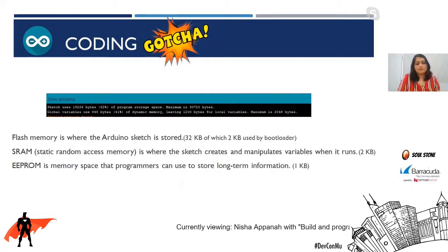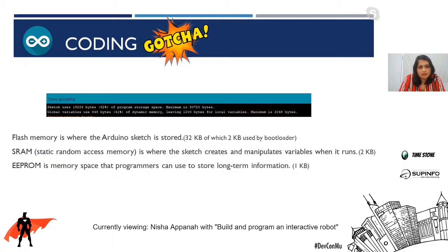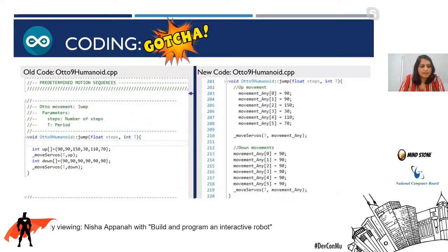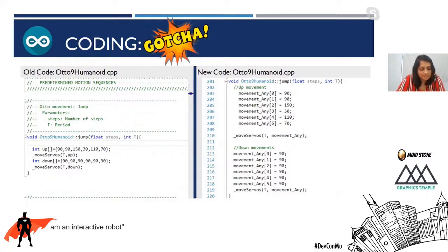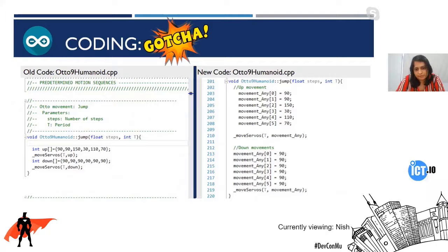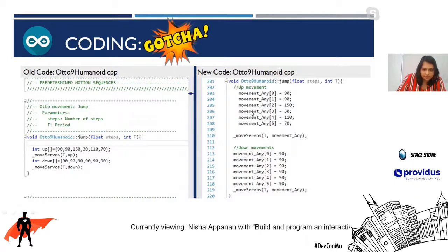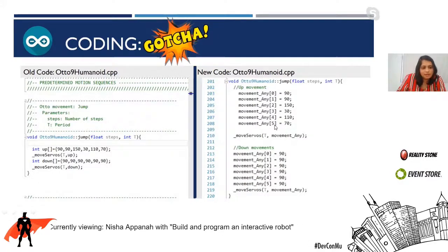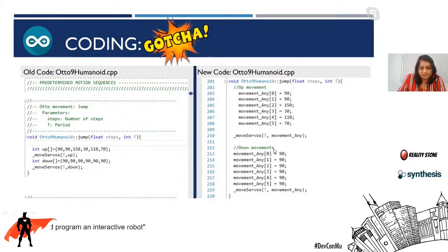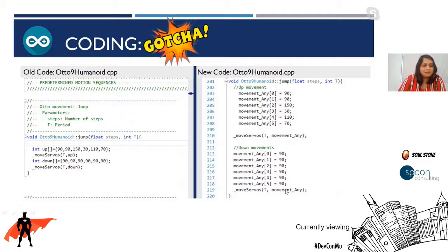Even though at compile time it says I'm only using 41% of dynamic memory, when the program runs I run out of memory. How I handled that initially: I looked into the Otto library code and found he was creating a new array every time he needed one, using more memory. So I modified the original Otto code to use just one array in most of the code. I noticed it was only using six positions anyway whether it was moving up or down — I'd just modify the one array, move the servos, insert new numbers, and move the second servos. That helped but still wasn't enough.